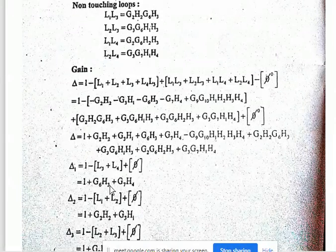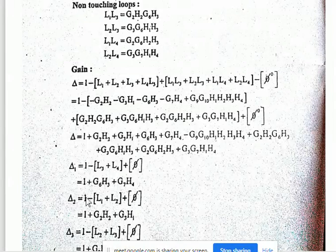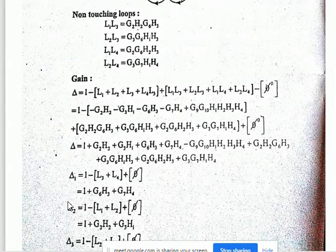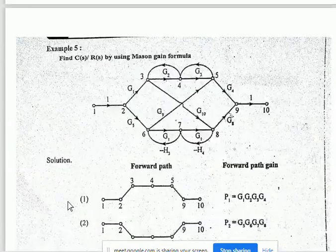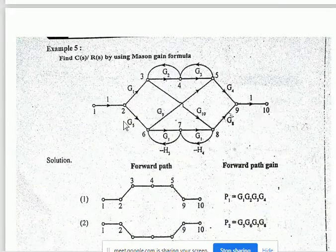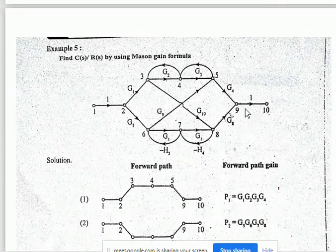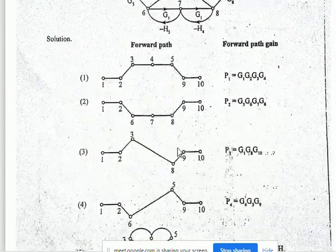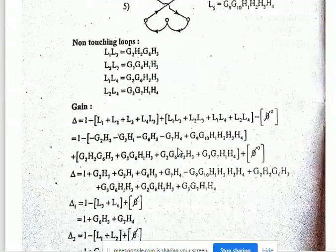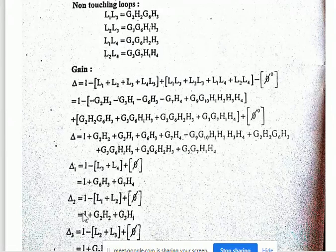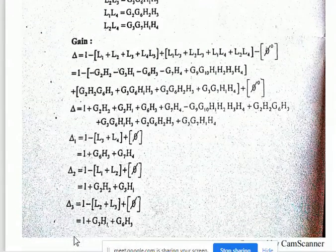So Delta 1 = 1 + G6·H3 + G7·H4. For Delta 2, the second forward path has L1 and L2 as non-touching loops. Delta 2 = 1 − (L1 + L2).